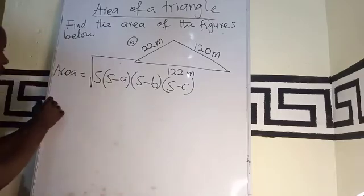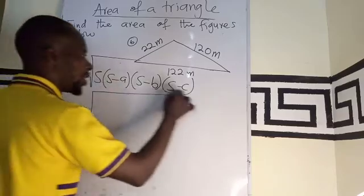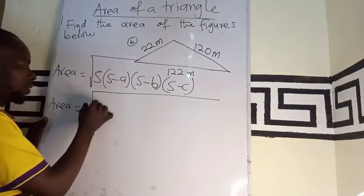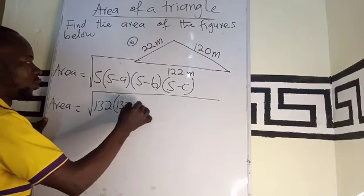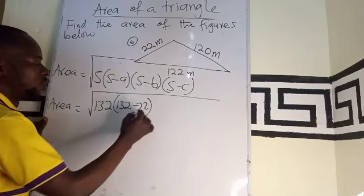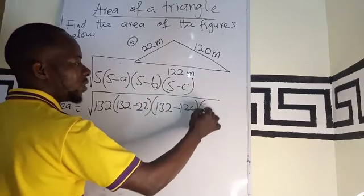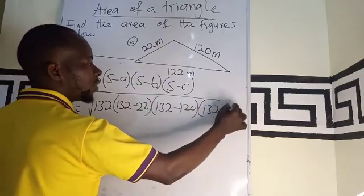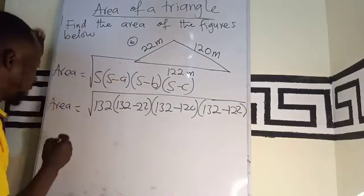Let's substitute into the square root. Your area is still going to be the root of s, which is 132, times s minus a, which is 132 minus 22, times 132 minus 120, times 132 minus 122.